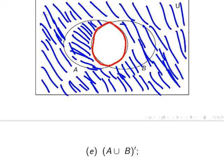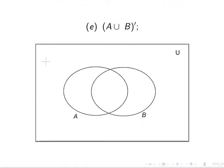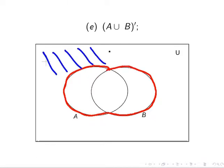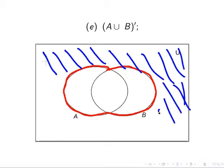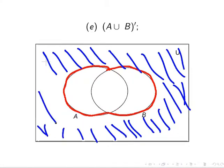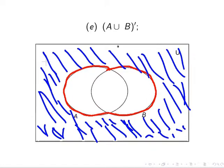Now we'll do examples E and F, which have a very similar relationship. First, let's look at the complement of A union B. What is A union B? It's everything enclosed by this red line — anything that's part of A or part of B. The complement of that is everything outside of that in the universal set, so it's the remainder of the universal set.